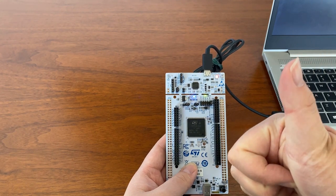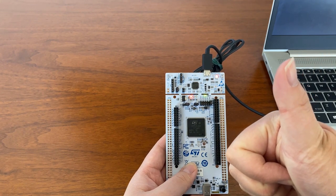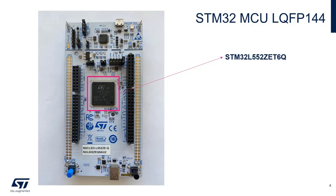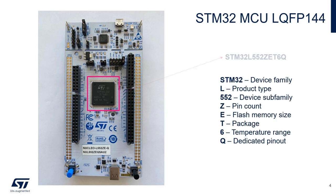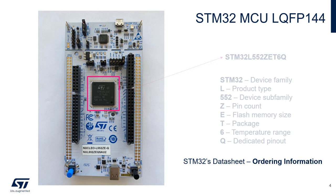We have now confirmed that the board is working as expected and are ready to start developing. At the heart of each Nucleo, you will find the STM32 microcontroller. These letters and numbers make up a code that represents features of the micro. Details that you can derive from the naming convention include, but are not limited to, pin count, flash memory size, and package. All this information can be found in the micro's datasheet under the Ordering Information section.